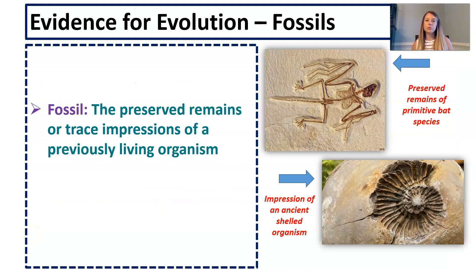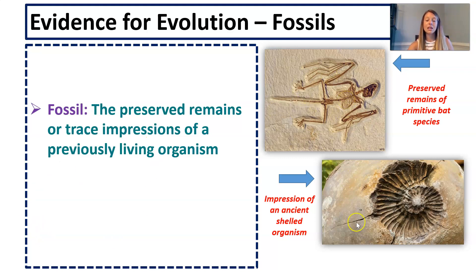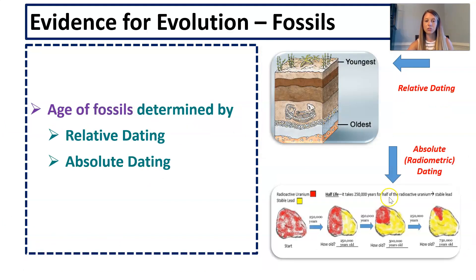Starting with: how do we use the fossil record as evidence for evolution? A fossil is the preserved remains or trace impressions of a previously living organism. This is obviously preserved remains, and here is an impression of an ancient shelled organism. Both of these would be considered fossils.